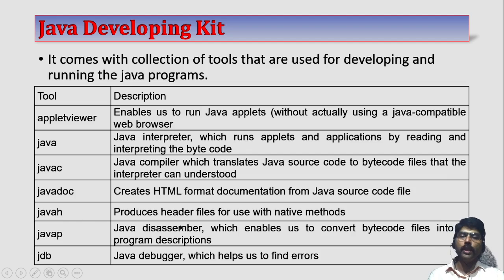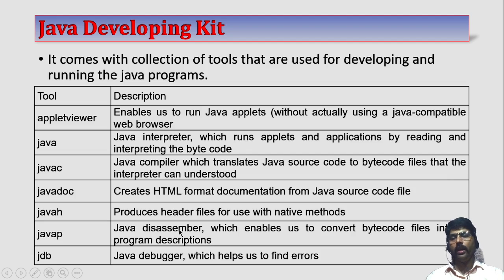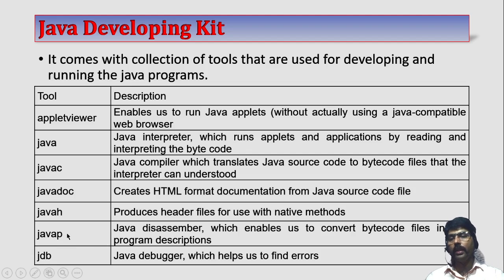JavaH produces header files for native methods. If you want to access some C or C++ functions, then we need JavaH. JavaP is a disassembler which enables us to convert byte code files into a Java description. If you have a byte code and you want to convert it into a Java source file — a reverse of compiler — then we use JavaP.